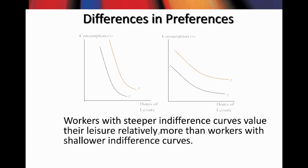Given these two different preferences, think about who is the lazier worker — is it the steeper or the flatter indifference curve? For this session, what we have done is present the idea of worker preferences using the utility function and illustrate it with the indifference curve analysis. We learned how to derive the slope of the indifference curve. Different workers may have different preferences and therefore different slopes. Remember this for the next discussion, where I will show you how to add the budget constraint into the analysis.